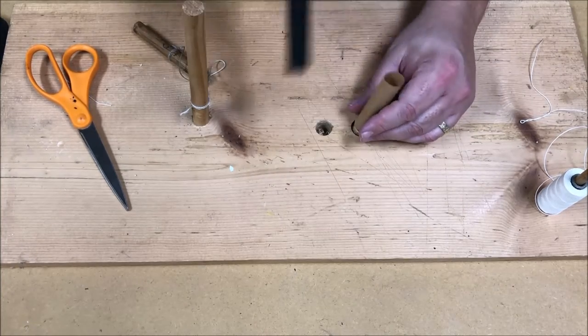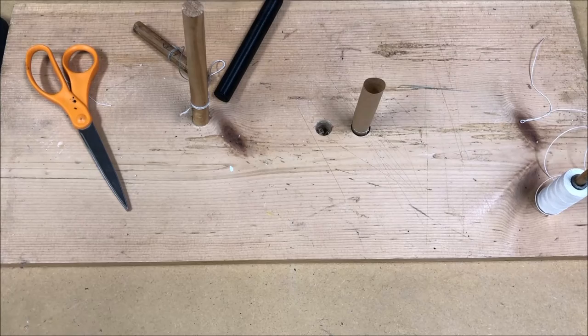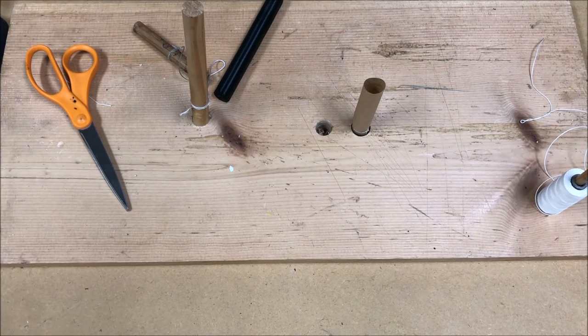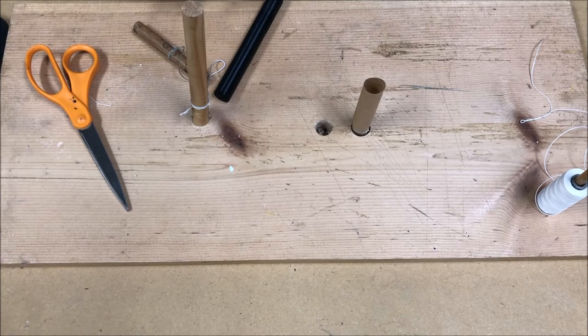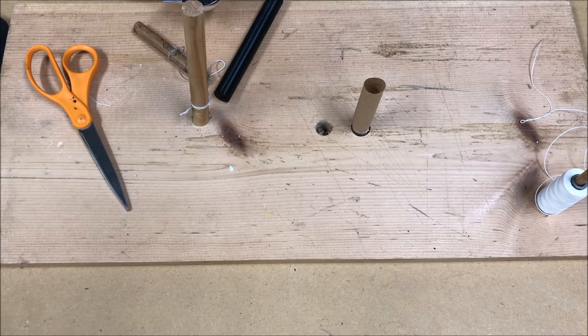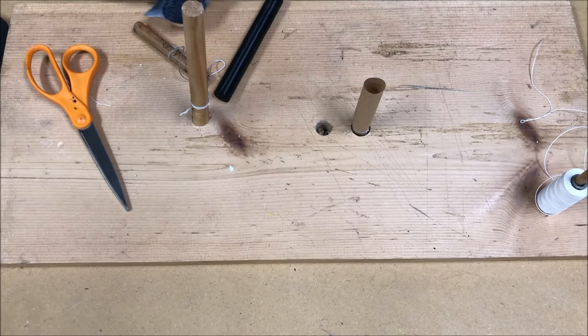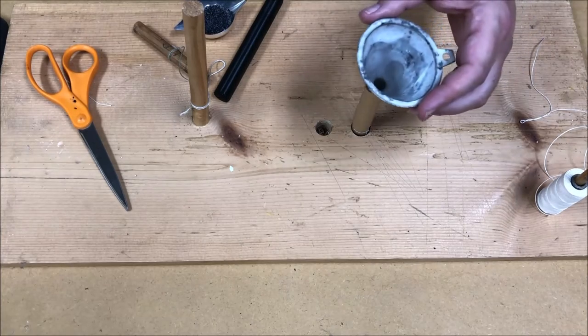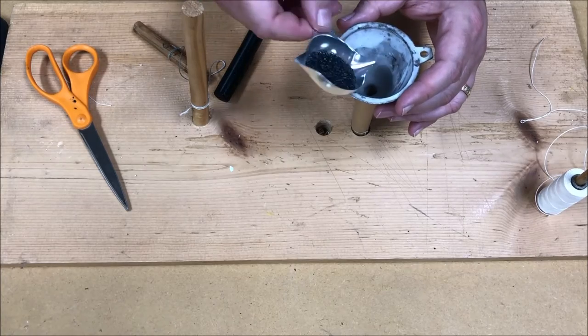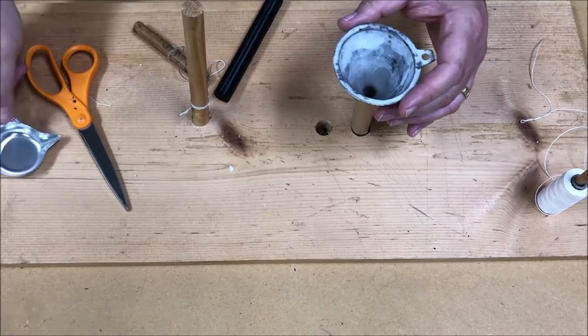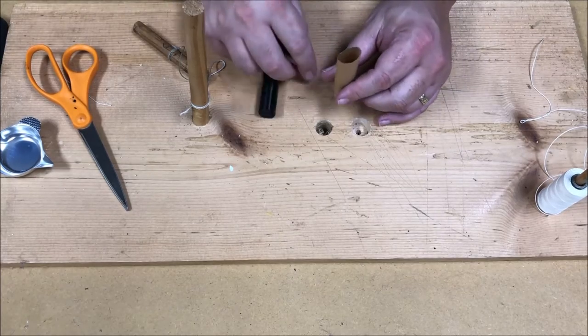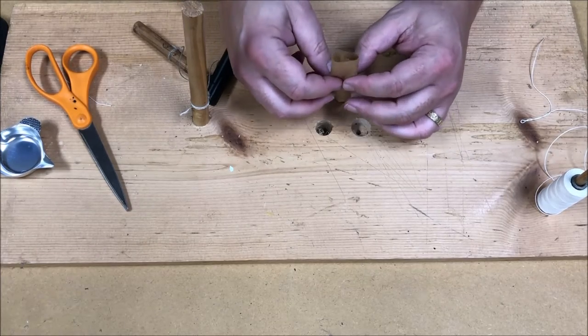So to finish the cartridge, you remove the mandrel. Next we have to charge the cartridge. Now in the percussion era, it was 110 grains of musket powder. In the flintlock era, it was 130 grains, and the reason is you need the extra powder for priming the pan of a flintlock cartridge. So we will put our powder down inside the cartridge.